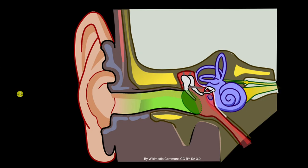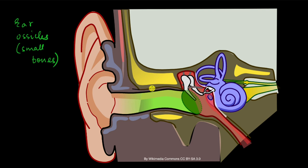Other than the cranial bones and the facial bones, the skull has a few more bones — six of them are present inside the ear. Going inside the external ear, we reach the middle ear, and here are the ear ossicles — small bones. This bone is called the malleus, a hammer-shaped bone. The next one is called the incus, an anvil-shaped bone. The last one is a stirrup-shaped bone called the stapes.